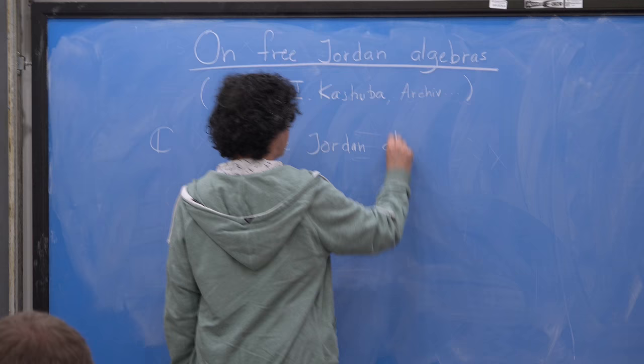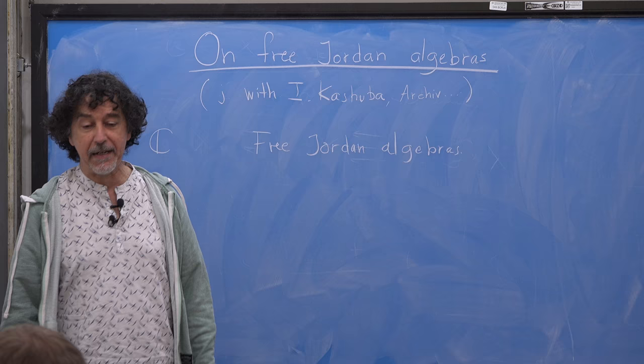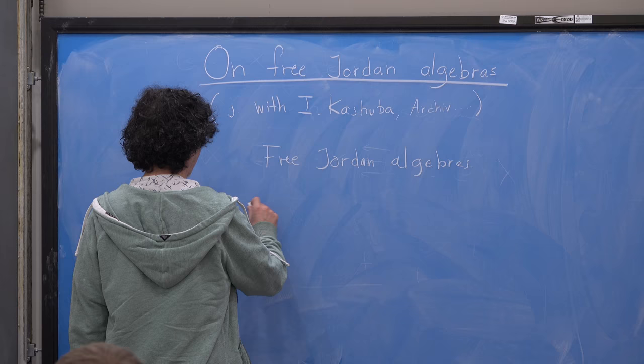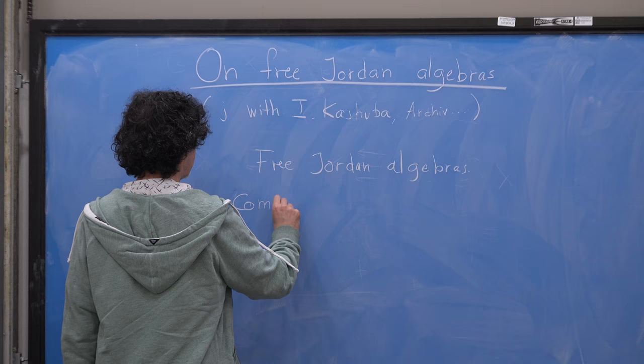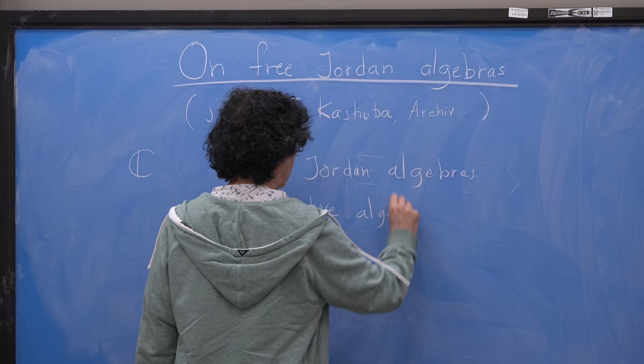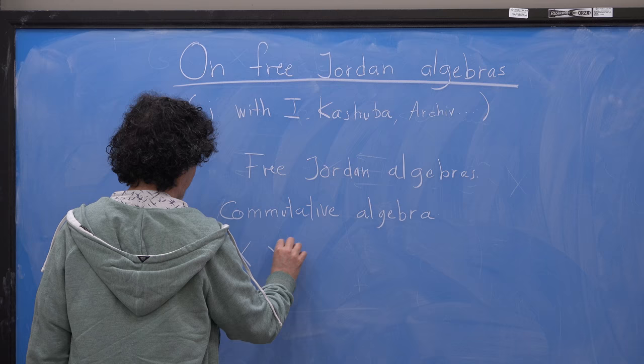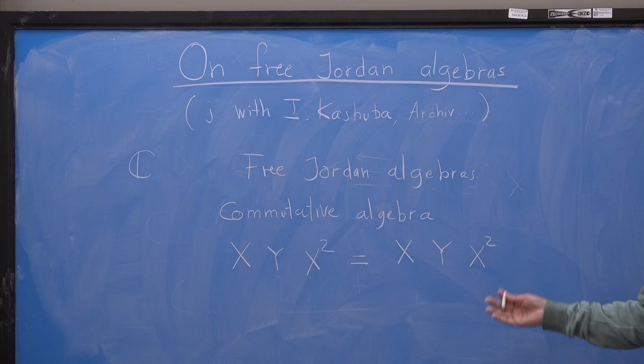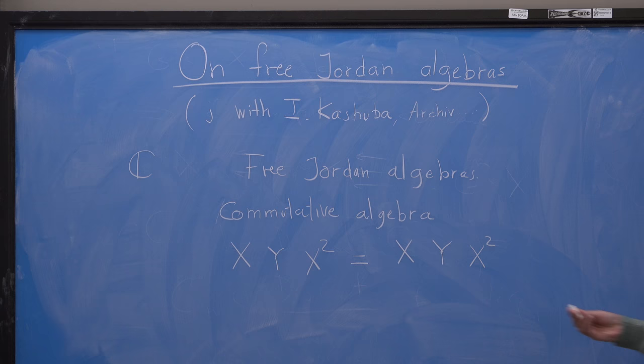What a Jordan algebra is — I will give a bad definition first and then there will be a better definition later on. The starting definition is a commutative algebra, but not associative, which satisfies the following property: X times (X times Y) times X squared equals X times (Y times X squared). Of course if you write it like this it looks ridiculous, but it is a non-associative algebra, so when you make the parentheses this becomes a real identity.